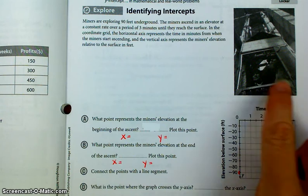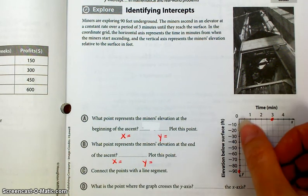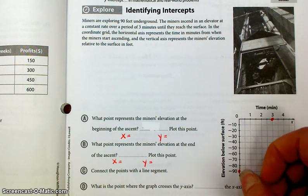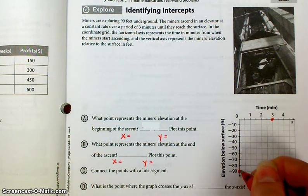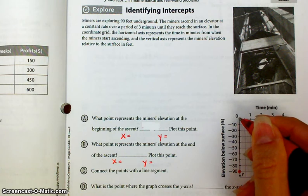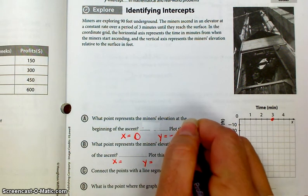So we're actually graphing in quadrant 4, if you remember your coordinate plane, 1, 2, 3, and 4, and that is because the elevations are negative, because these guys are underground. So what point represents the miner's elevation at the beginning of the ascent? Well, at the beginning of the time period, at time equals 0, they're at an elevation of negative 90. So the x value is 0, and the y value is negative 90.